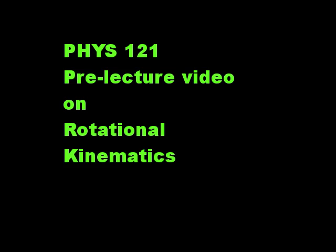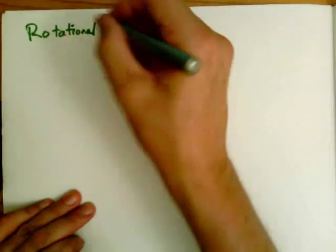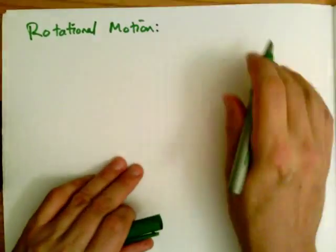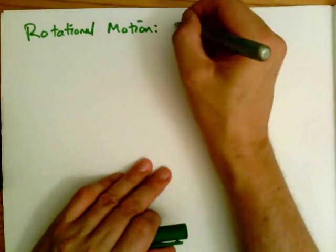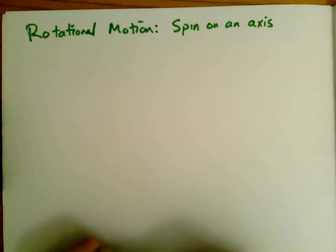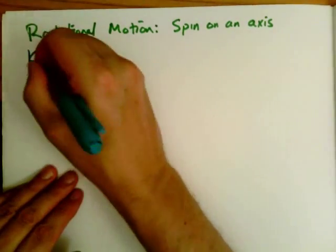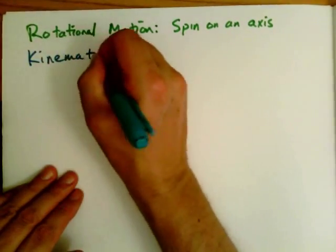Today we will look at rotational kinematics — rotational, not circular, rotational kinematics. What we mean by rotational motion is basically a body spinning on its axis, not moving from left to right, up and down, or back and forward, but simply rotating on an axis.